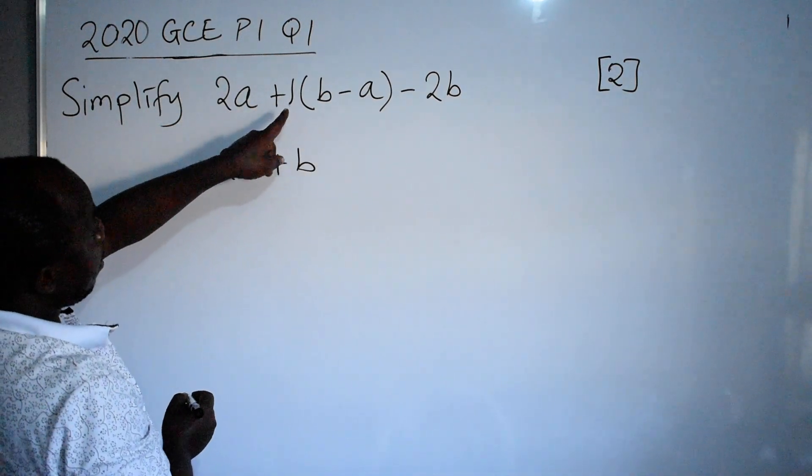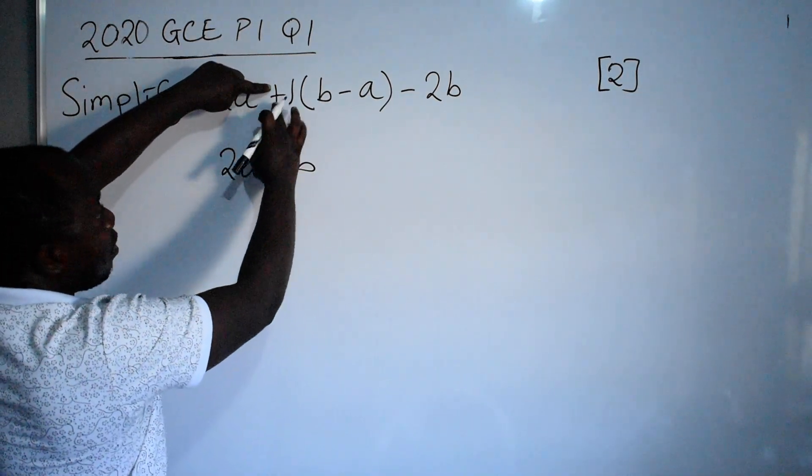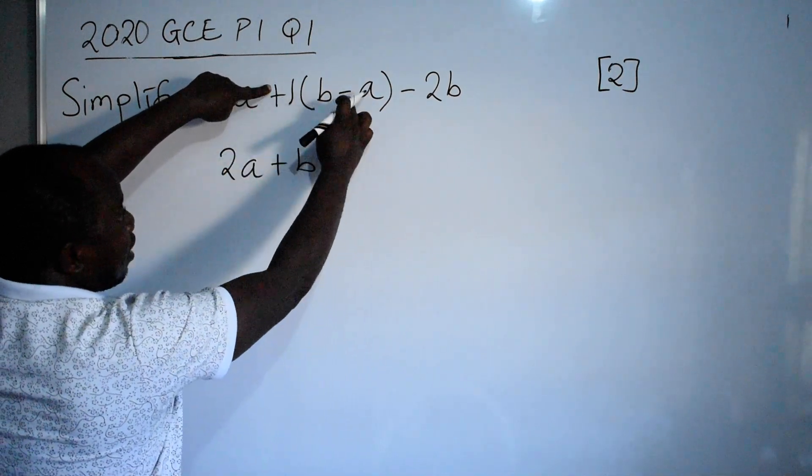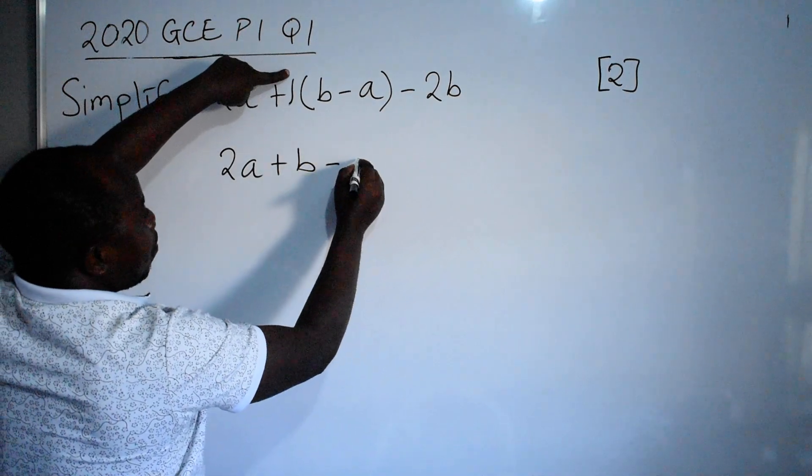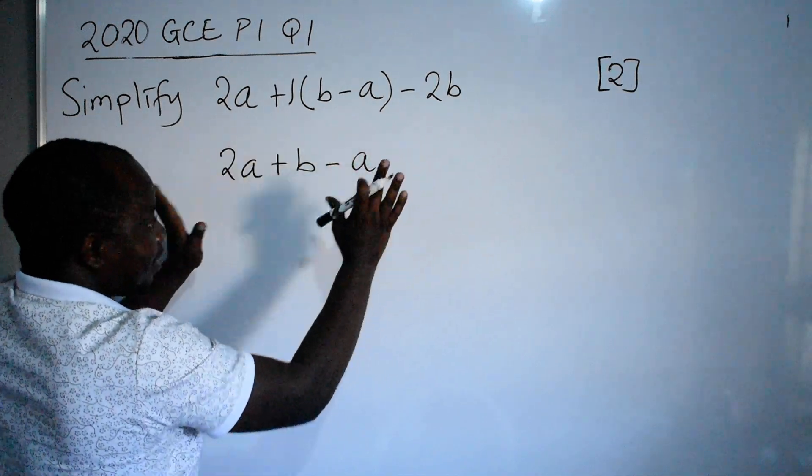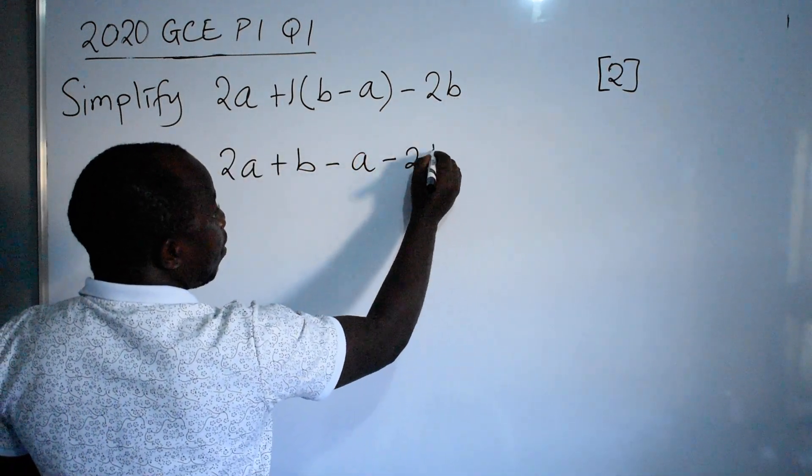Alright, so 1 times b, that is the same as b. Then positive times negative here will give us negative. The signs are different, so negative. 1 times a, this will be a. We are together, so we have multiplied. Brackets have gone. Outside, we have minus 2b.